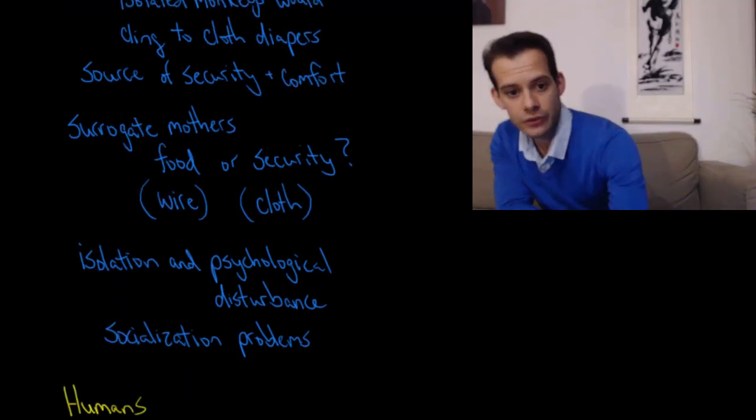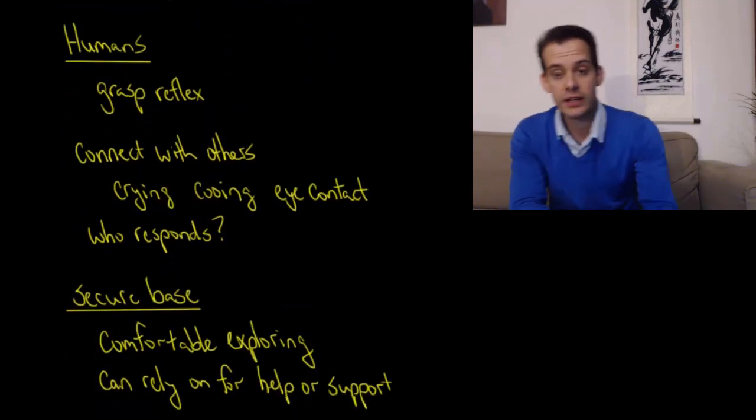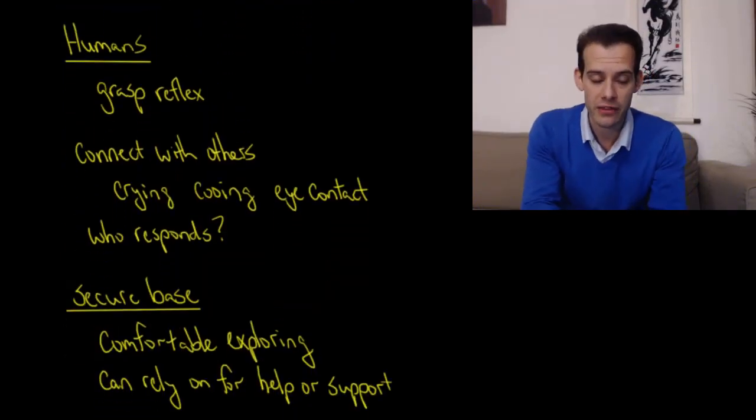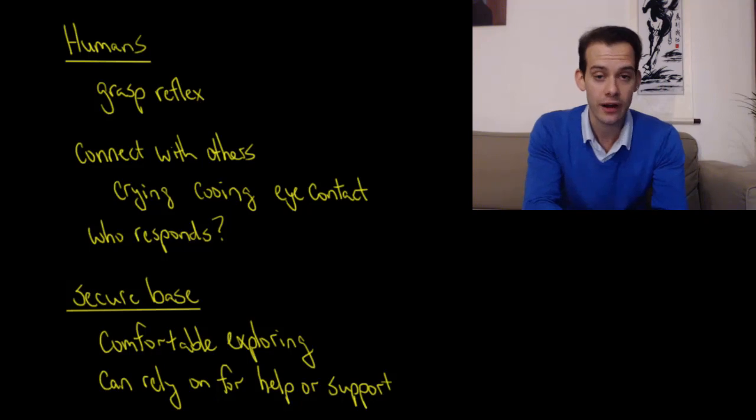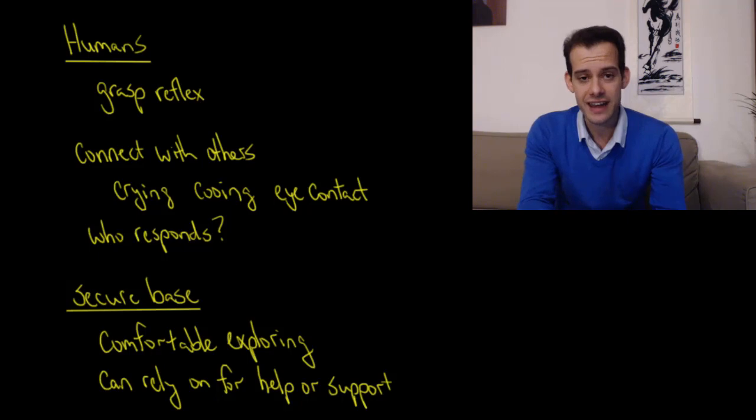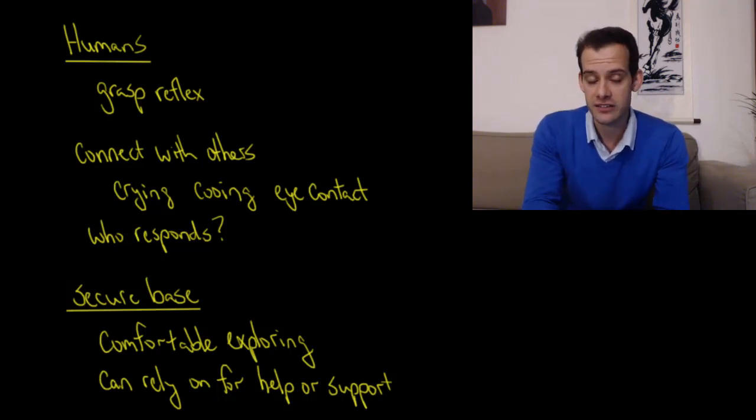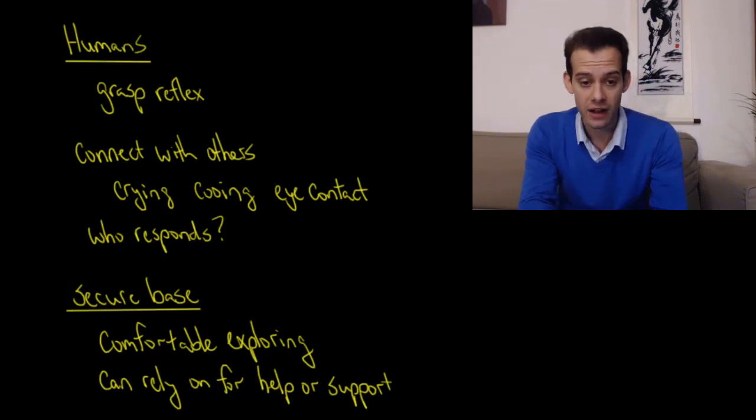So now we can turn to humans. While human infants don't cling to their mothers the way these monkeys do, we do still have a vestige of this in a grasp reflex. Infants will show this grasp reflex where they will grasp something that touches the palm. They can actually hold on strong enough to support their own body weight. But we form this attachment and connection with others by paying attention to who responds to us. Infants communicate with others by crying, cooing, making babbling sounds, and by making eye contact.